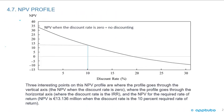We're going to start this LOS by looking first at the NPV profile. On the Y-axis we've got the net present value, going from negative up to positive. On the X-axis we've got the discount rate starting from zero — no discounting — up to plus 30%.